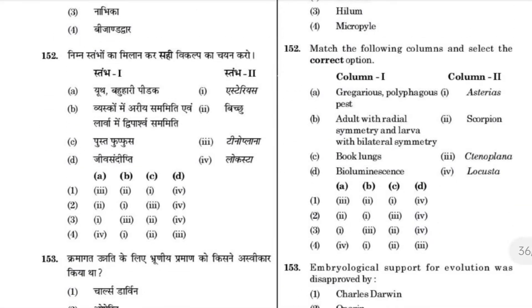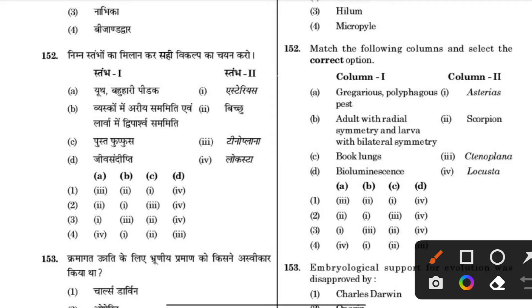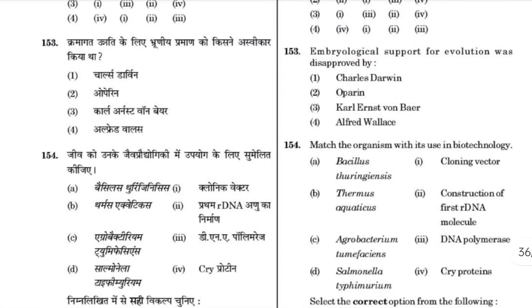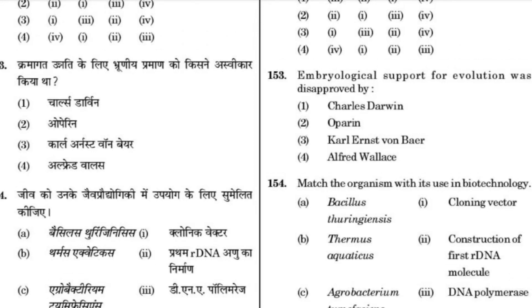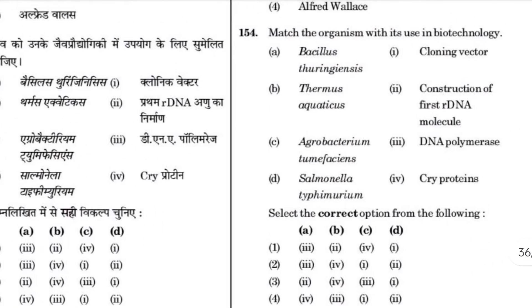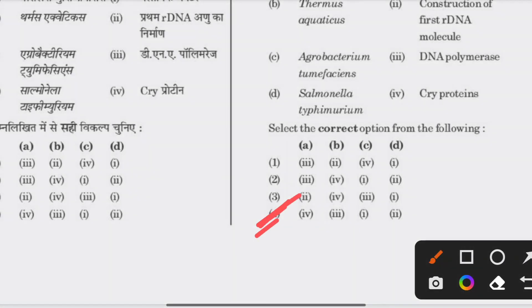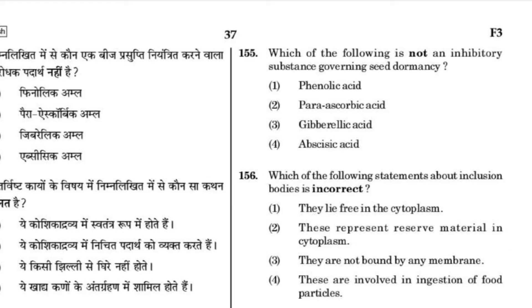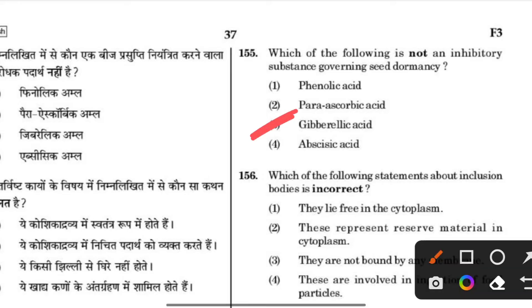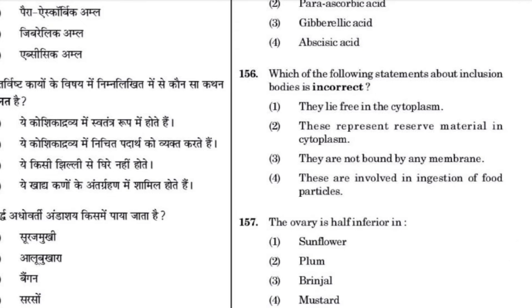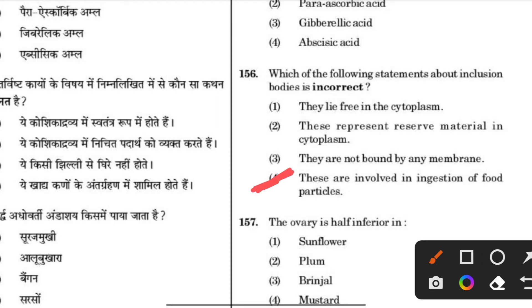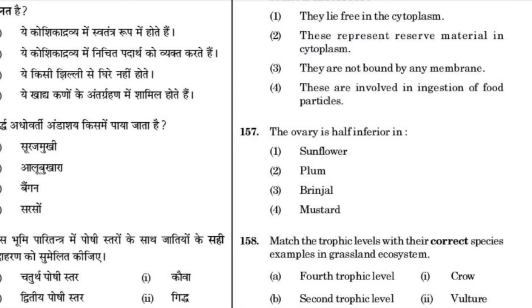The body of the ovule is fused with the funicle in the region of the hilum. Match the following columns and select the correct option — the answer is 4. Embryological support for evolution was provided by Karl Ernst von Baer. Master organism used in biotechnology — the answer is 4. Abscisic acid is not an inhibitory substance governing seed dormancy — this is incorrect.